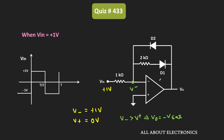On the other hand, for diode D2, the anode is connected to the negative saturation voltage while the cathode is connected to V minus. Since the anode is more negative than the cathode, diode D2 will remain off. So when V1 equals plus 1V, diode D1 will remain on while D2 will remain off.